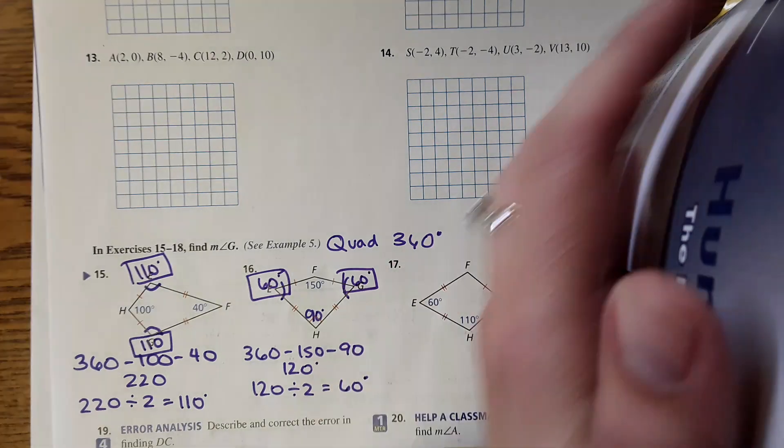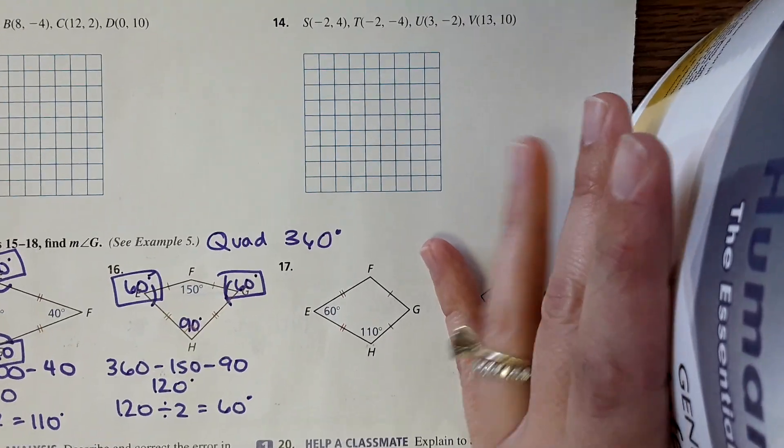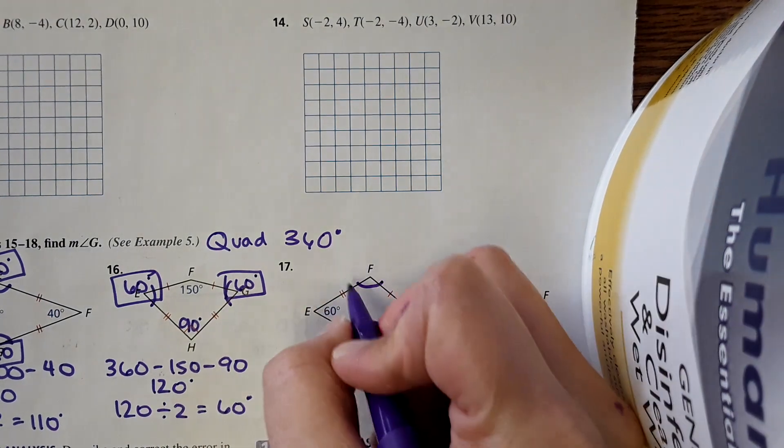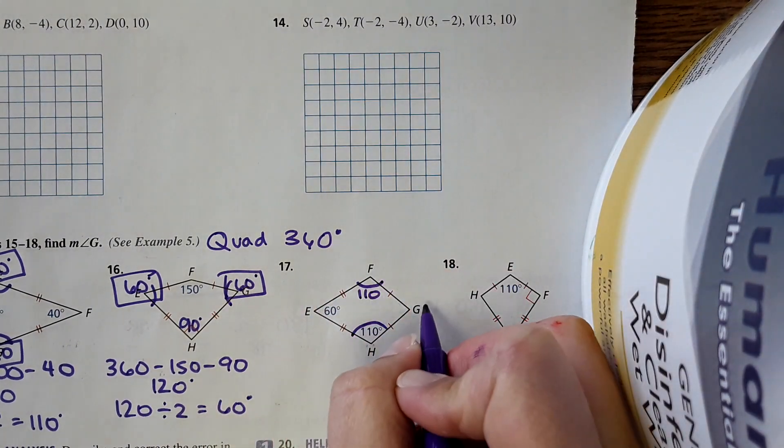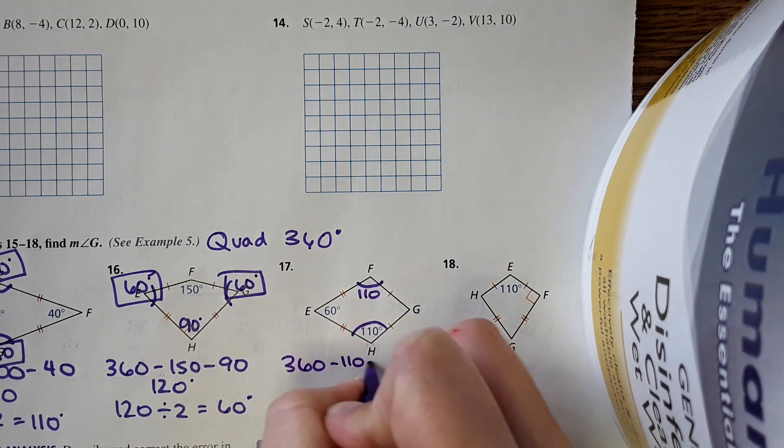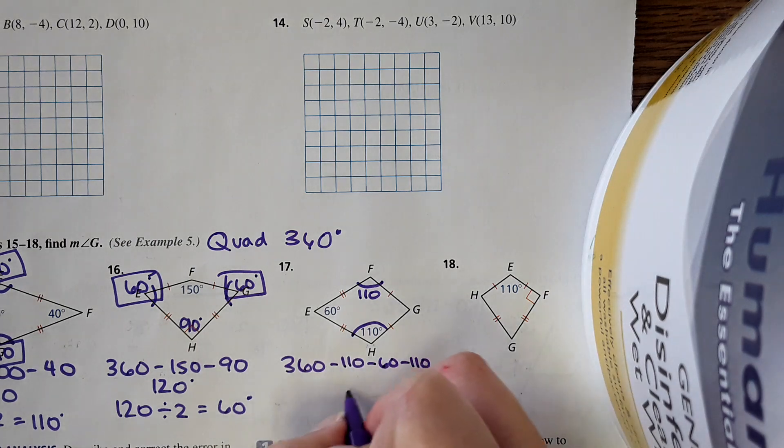Okay, 17 and 18, same concept. This one's just a little bit different. For 17, they give us this angle, which is the same measure as this one, so this would be then 110, and we need to find g. So 360 minus 110 minus 60 minus 110, and we're left with 80 degrees. So 80.